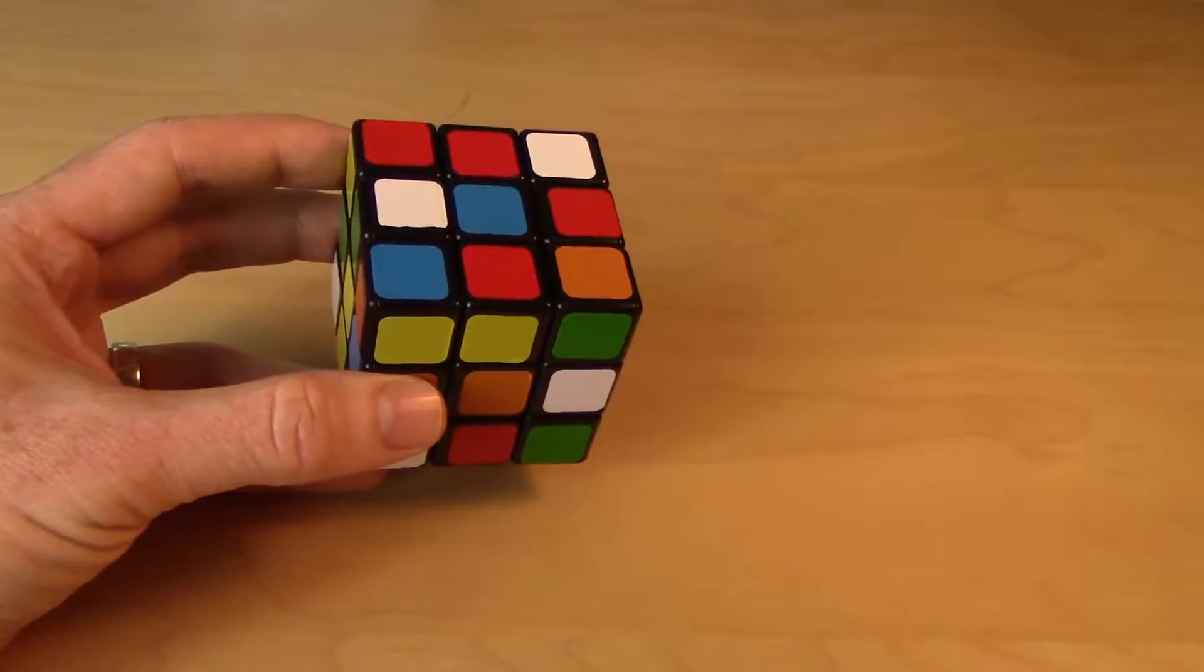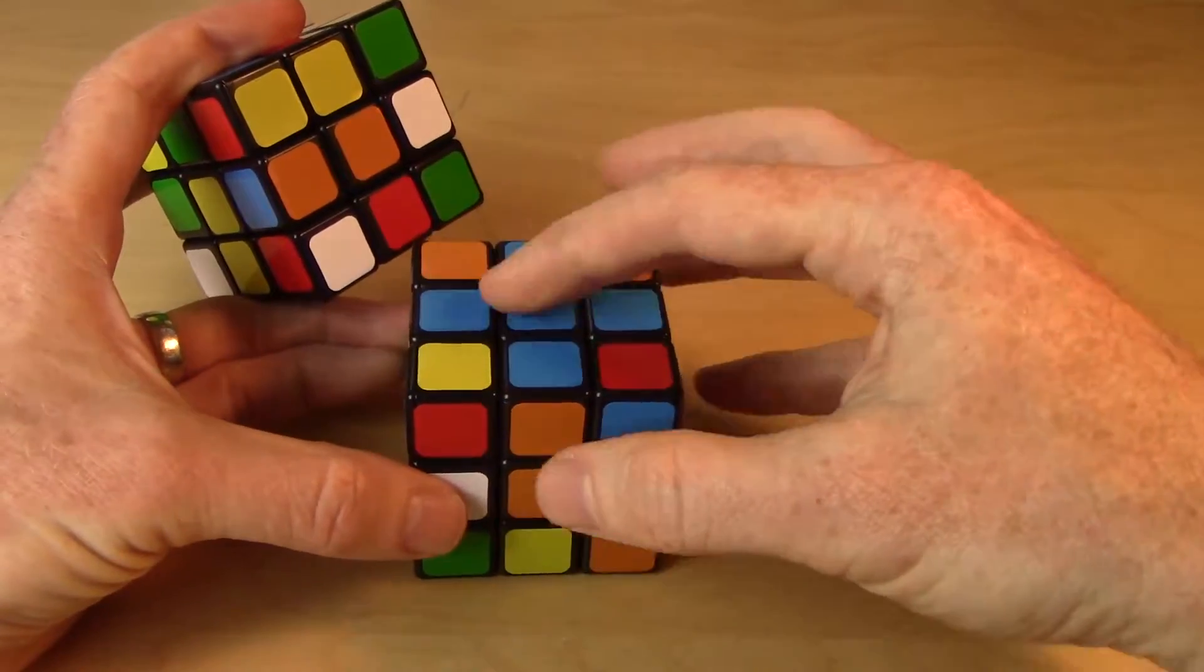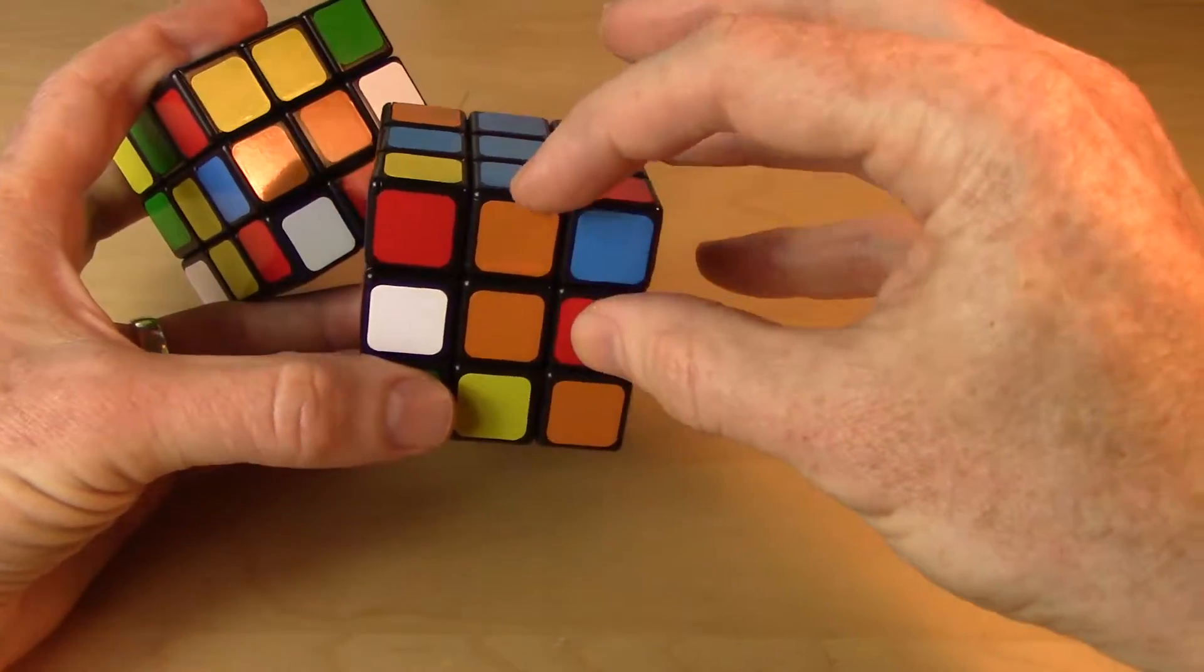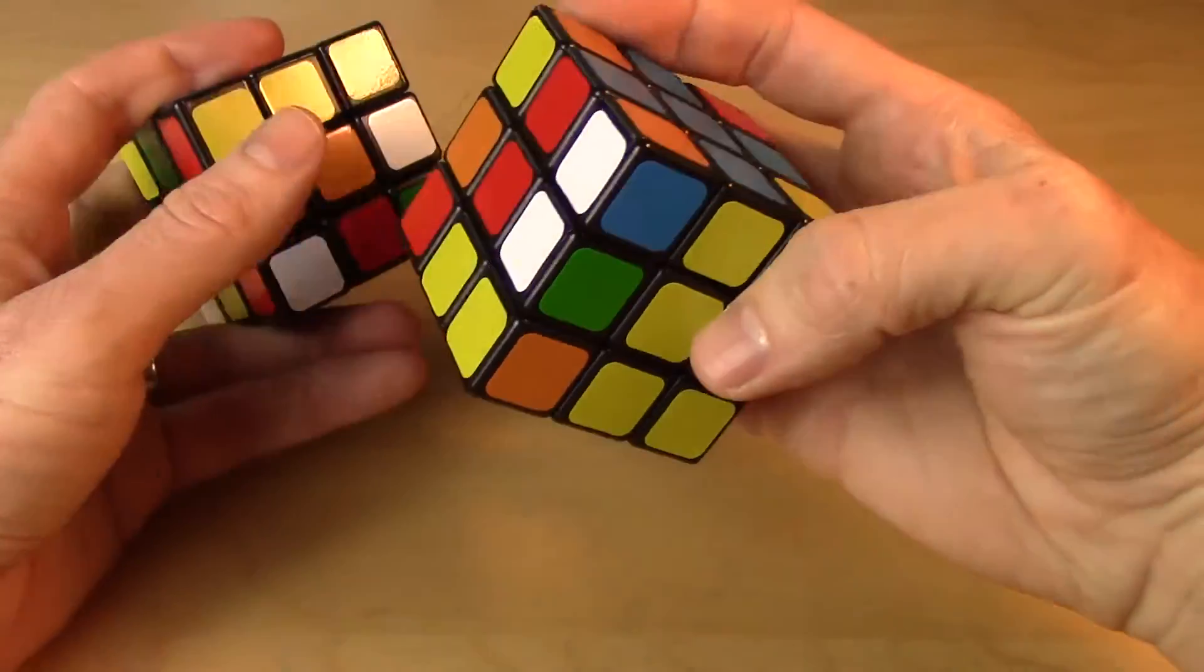So our ultimate goal is to have the puzzle look like this where we've got the blue cross on top and that cross extends deeply so it extends through the next layer as well to the middle layer.